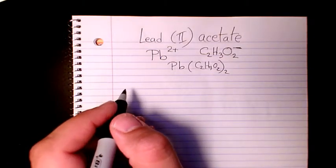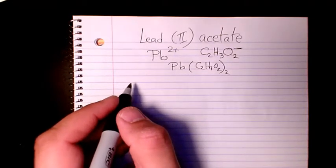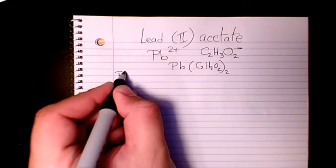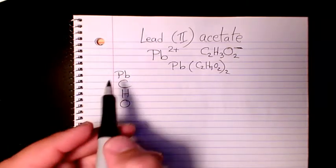Now I want to find out the molecular weight. In order to find out the molecular weight, we need to list all the elements we have in this formula: Pb, C, hydrogen, and oxygen.